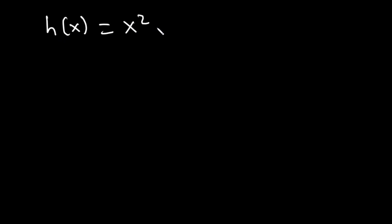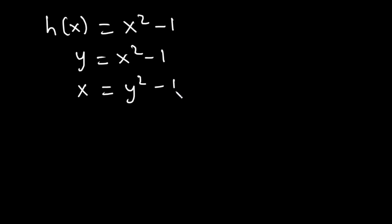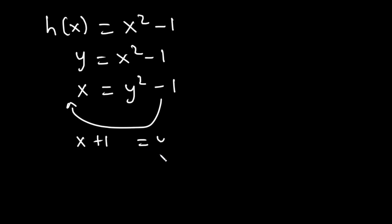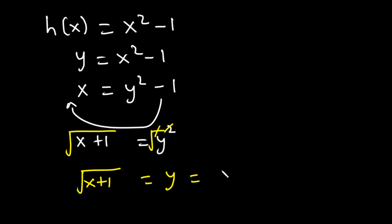What is the inverse of the function h(x) = x² − 1? To find it, we set y = x² − 1, then interchange x and y to get x = y² − 1. Transposing −1 gives x + 1 = y². To remove the exponent, we introduce square roots: y = √(x + 1), which is h⁻¹(x).